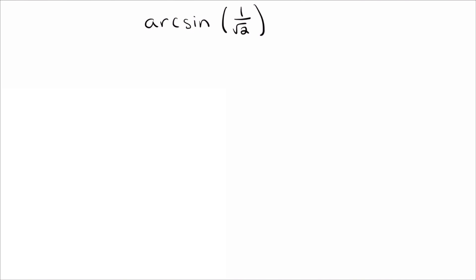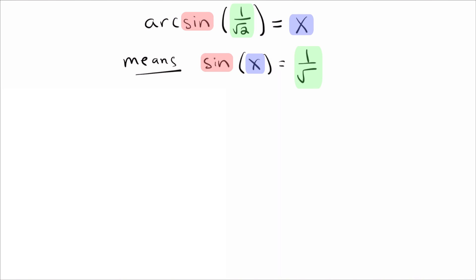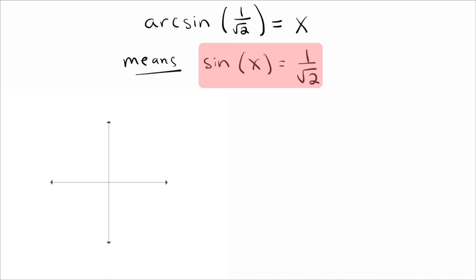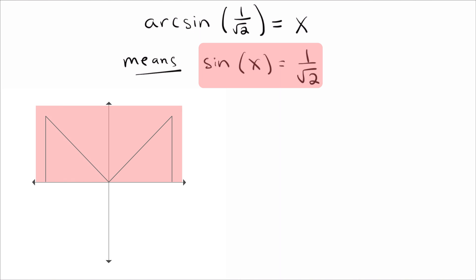The first problem is arcsin(1/√2). My suggestion is: even though there's no equal sign, go ahead and write one yourself — set it equal to x. Then write out what this means: sine of x equals 1 over the square root of 2. The next step is to figure out not yet where sine equals that value, but just where sine is positive, because 1/√2 is positive. Sine is positive in the first and second quadrants.